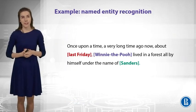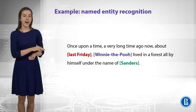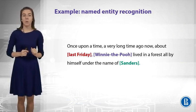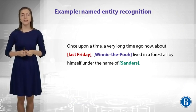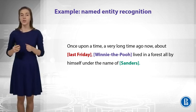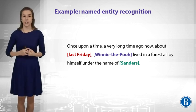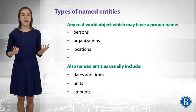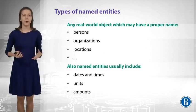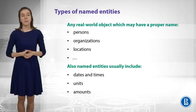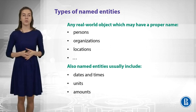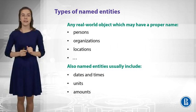Another example would be named entity recognition. Here I have a sequence where 'last Friday' or 'Winnie the Pooh' would be named entities. Sometimes we need to find them in the text and use them as features, or to generate an answer to some question. Named entities include persons, organization names, locations, dates, units, and any other entities you see in the text.